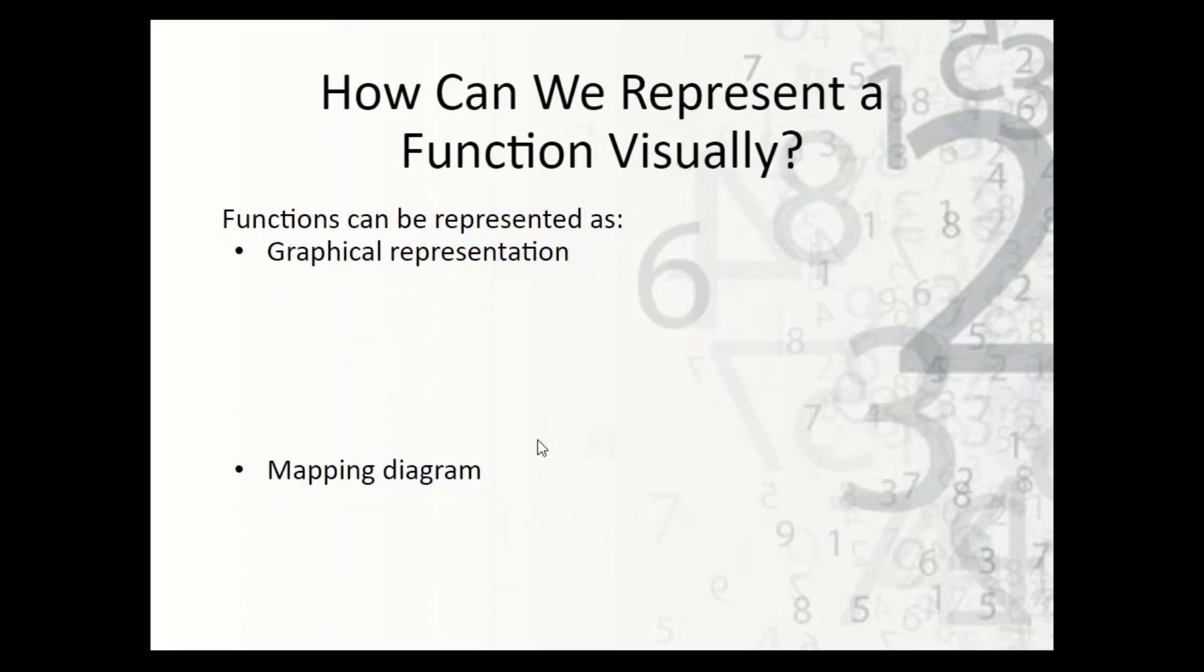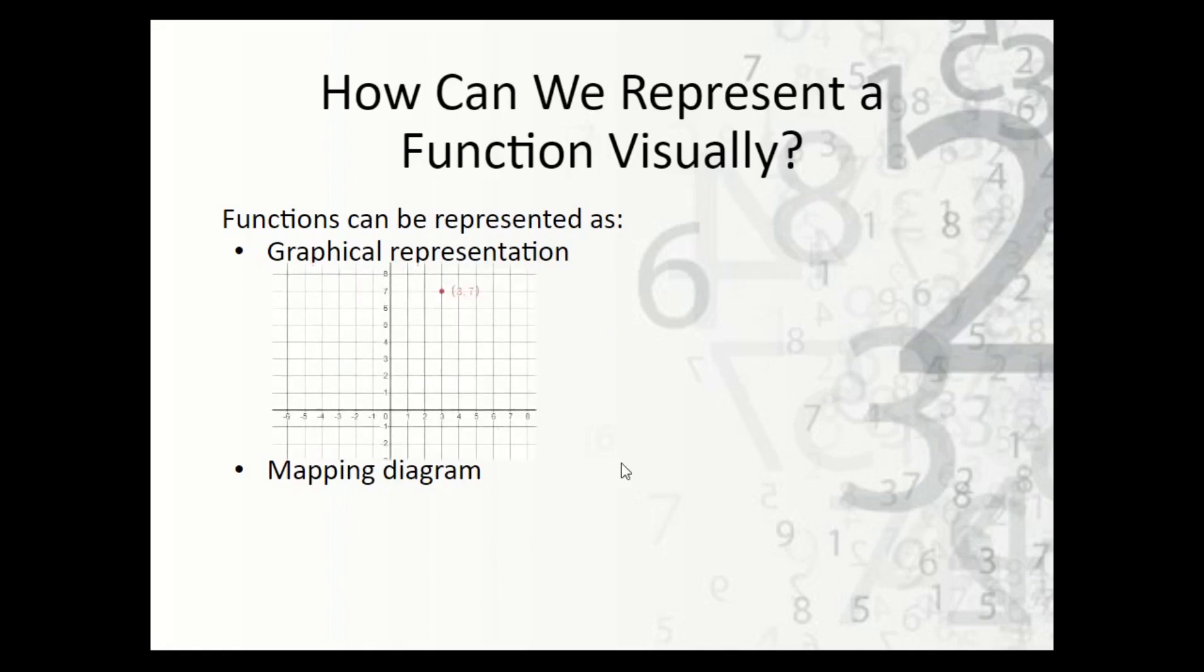We can also do it visually. We could do it graphically, so we could have a point here, 3, 7 on the graph. Or we could do a mapping diagram that looks like this, where we have 3 being mapped to 7 by an arrow.